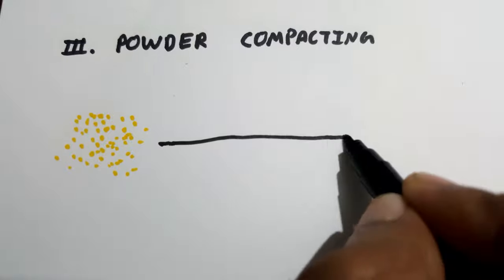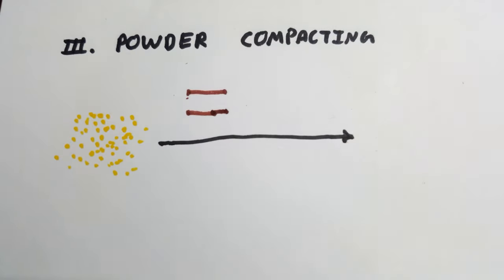Third comes powder compacting, which is the process of pressing and imparting shape to the powder mix using a die and punch arrangement. The powder mix is fed through a vibrating hopper and feeder which allows smooth flow of powder and die. Pressure is then applied on the powder mix through the upper punch.